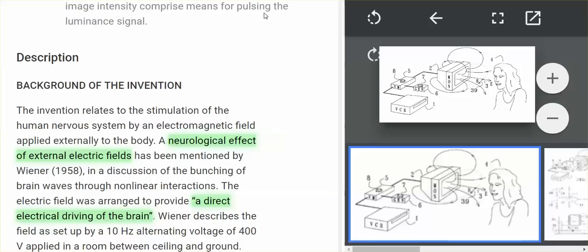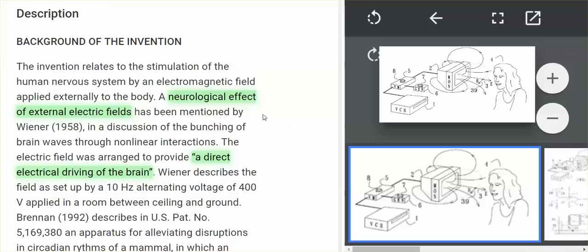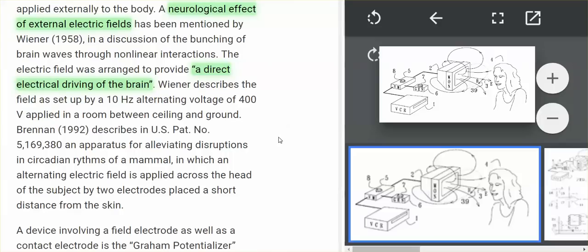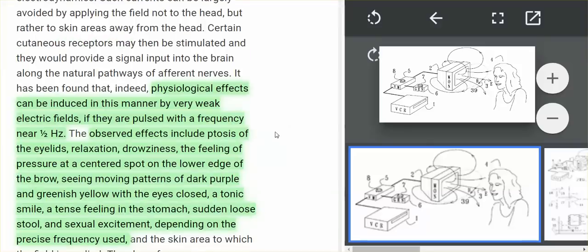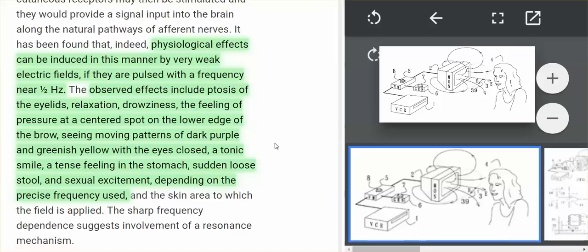And you can't tell me that this is not being remotely controlled. But the neurological effect of external electric fields, those external electric fields. Yeah, this is a specific way to control somebody's nervous system through monitors and TVs. But they do do it through cell phones and cell towers and Gwen towers and Wi-Fi and smart meters. It is a direct electrical driving of the brain. Electric field is applied predominantly to the head so that electric currents are induced in the brain. Physiological effects can be induced in this manner by very weak electric fields if they are pulsed with a frequency near half hertz.